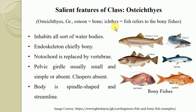First of all, all fishes belonging to Osteichthyes inhabit all sorts of warm and cold water bodies — they are found in fresh water, brackish water, and salt water. In contrast, most Chondrichthyes are marine fishes. Osteichthyes inhabit all kinds of water bodies, whether fresh water, salt water, or brackish water.